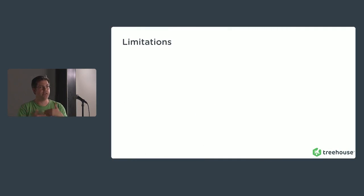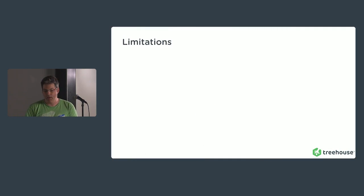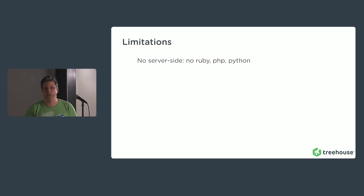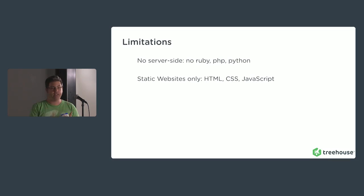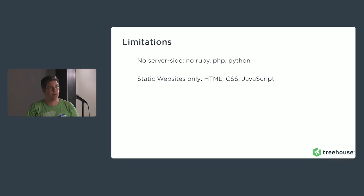There are some limitations for what you can put up on GitHub. First of all, there's no server-side stuff. So you're not going to do Ruby, PHP, or Python. You can't have WordPress up there. But it's free. So it's static websites only — your HTML, CSS, JavaScript. You can throw up an index.html page and suddenly the world will see your portfolio or whatever it is you want to host.